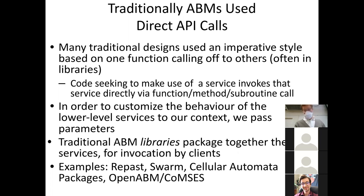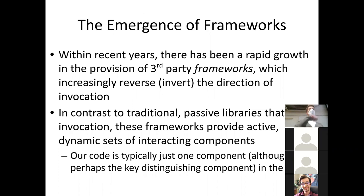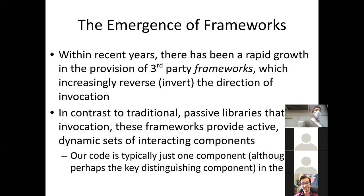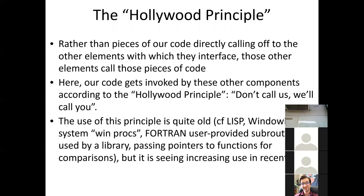These days, a lot of code is written in a way that is called by the frameworks. Traditionally, ABMs made use of direct calls — a top-down model with a big for-loop and an inner loop over agents. But in the past decade or two, frameworks have come up where the code is called by other code. You're putting in snippets of code that get invoked at certain times, fitting them into a larger system. This is in contrast to libraries, which our code calls out to — instead, our code is getting called. This is the Hollywood Principle: don't call us, we'll call you.